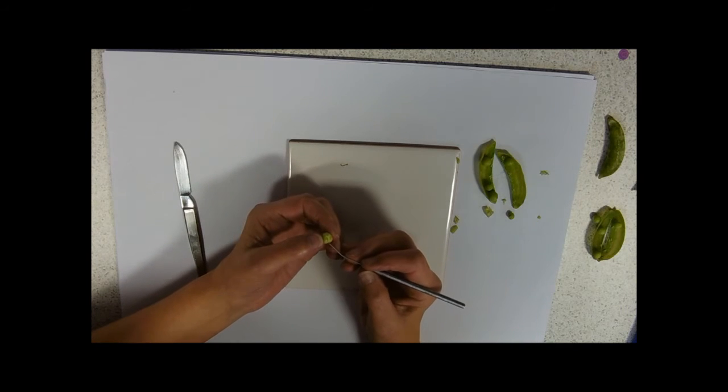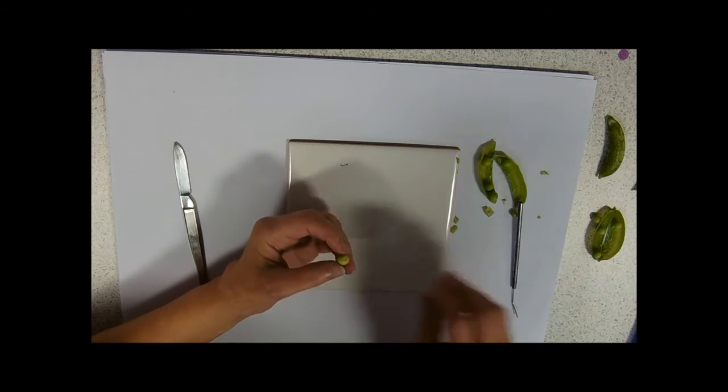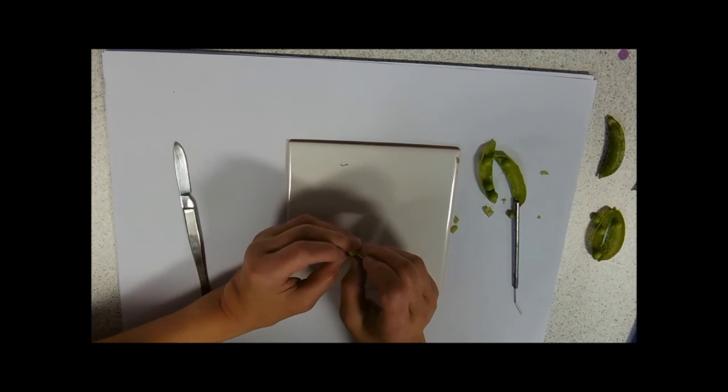So this is the radical. This is the part of the embryo that is going to become the root.